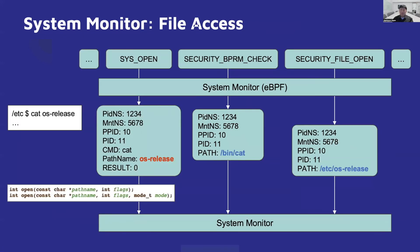Similar to process execution, the system monitor watches the system events for file accesses while getting the full path of a file through the security_file_open hook. Here, if we execute cat /etc/os-release, as you can see, we can get the system events for the file access and the full absolute path of a source and a target file.